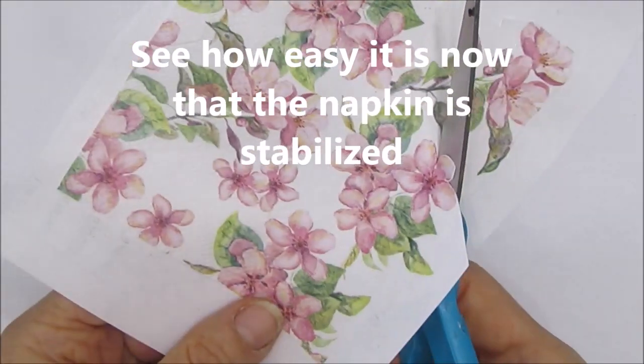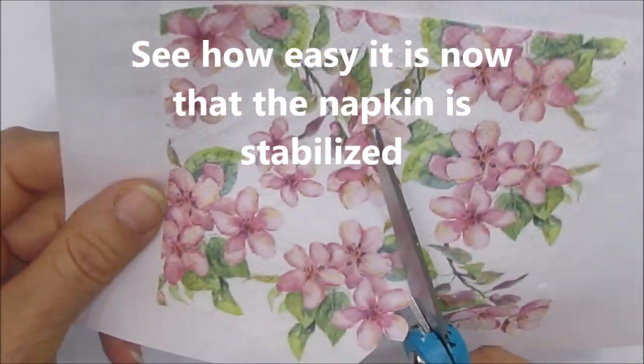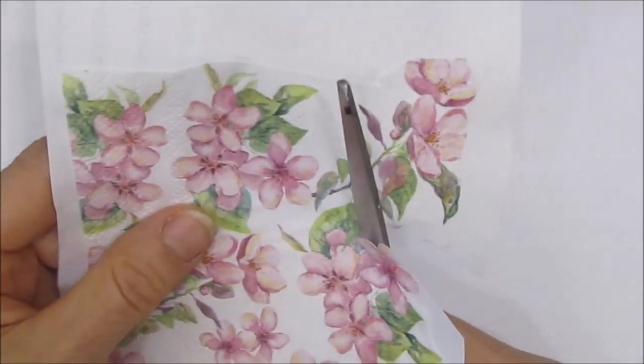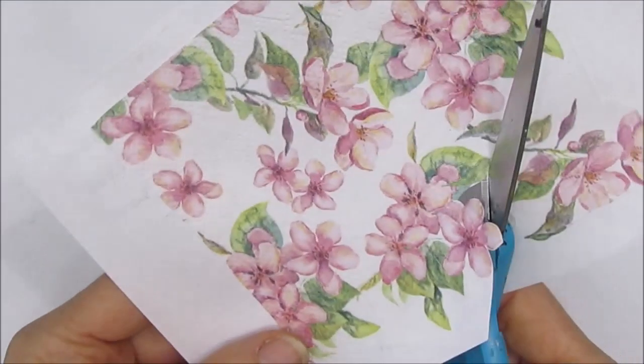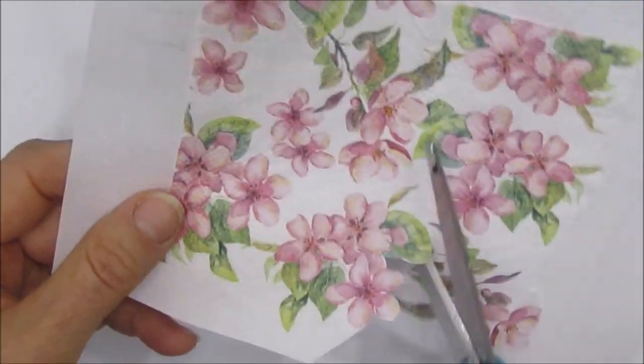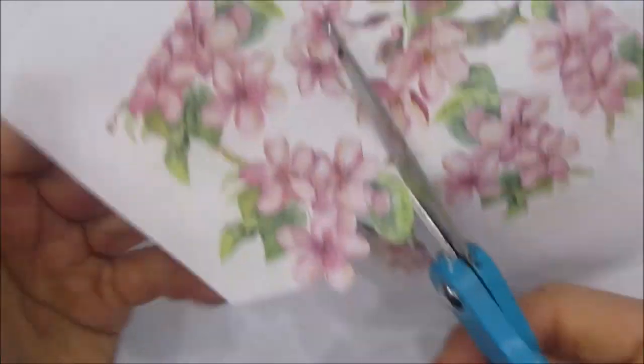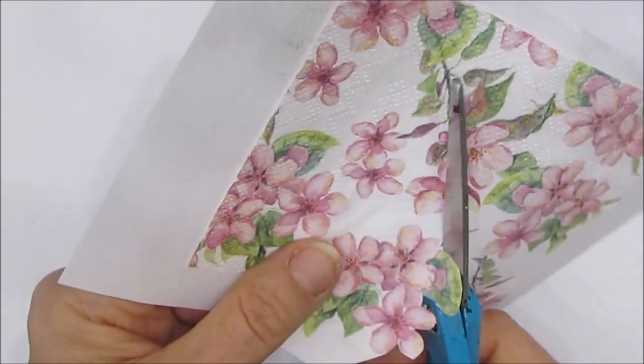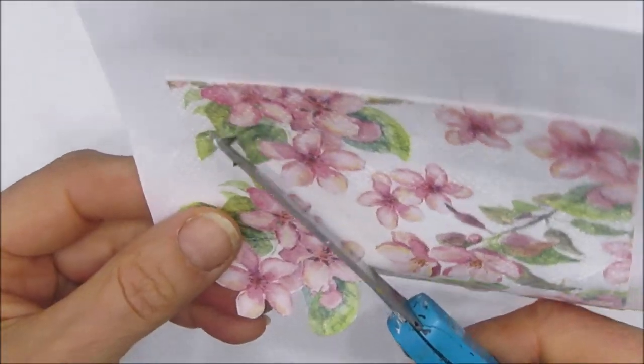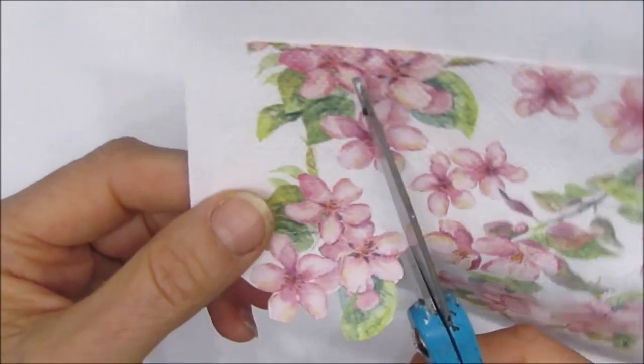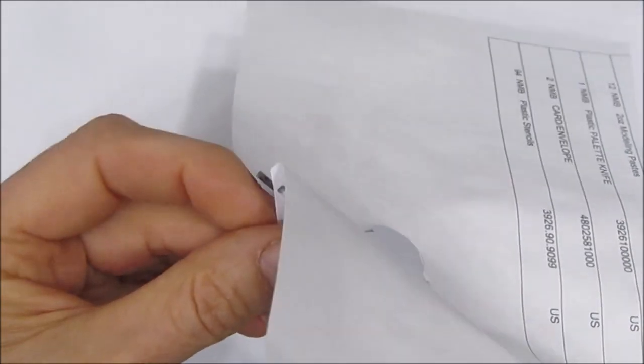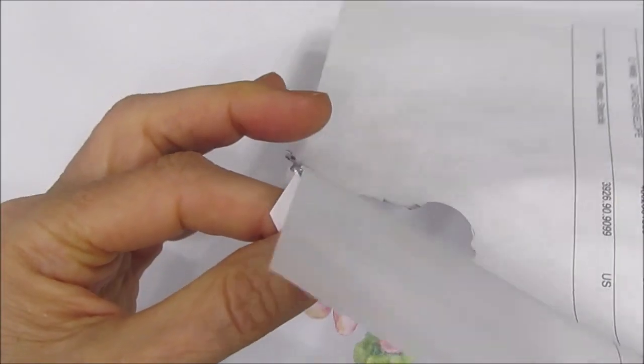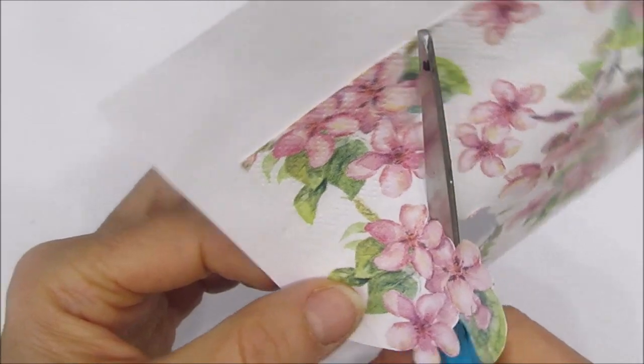So now I'm going to take my scissors and cut. The paper completely stabilizes it. So it is like you are cutting a printable. Cutting something out of copy paper. And it's so much easier. And you can cut things off. You can edit it as you wish. You can be as precise as you want. But it allows you to get right there.